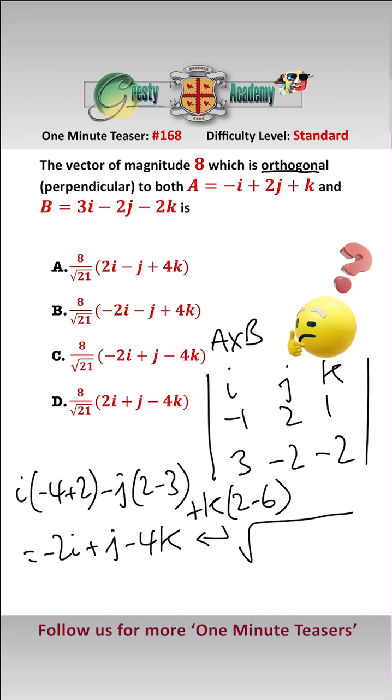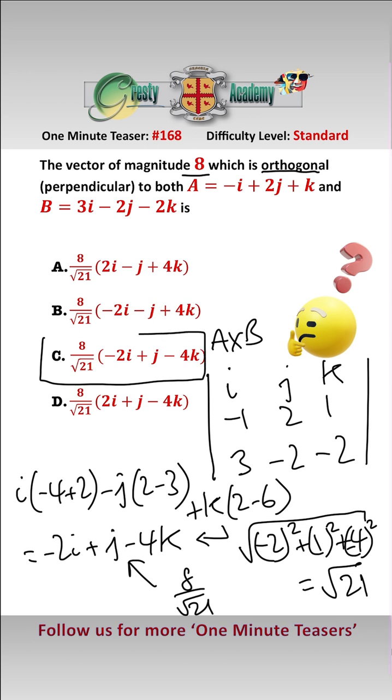But that magnitude is equal to the square root of minus two squared add one squared add minus four squared, which equals root 21. And therefore, if we want the vector which has magnitude eight, we need to multiply this vector here by eight over root 21, which gives us answer C is the orthogonal vector which has magnitude eight.